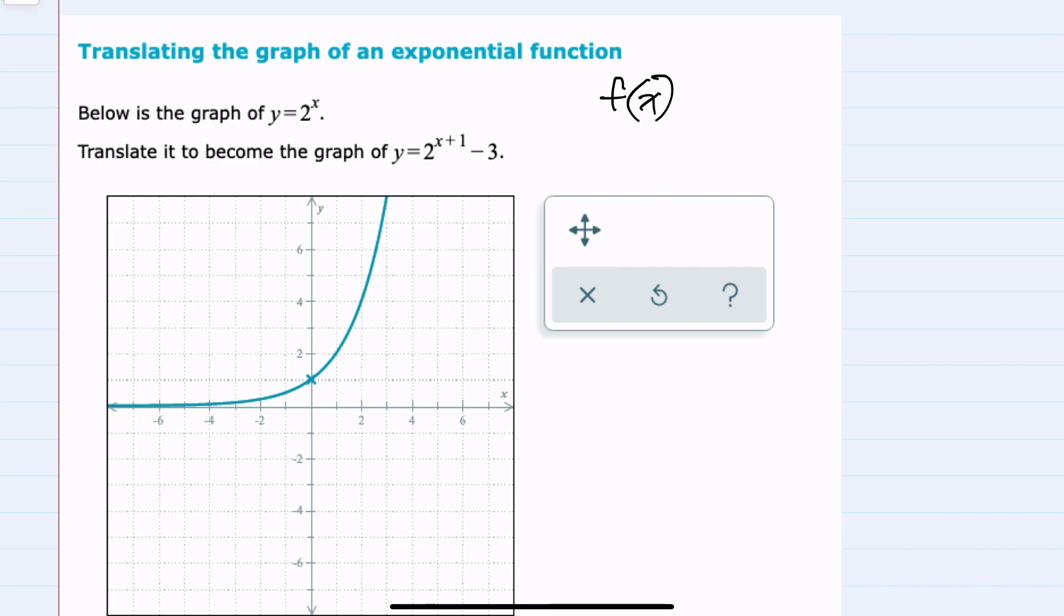I'll start by recalling if I take a function, say f of x, and I add some value c to that f of x, then when c is positive, that would translate our graph up, and if c is negative, then that would translate our graph down c units.